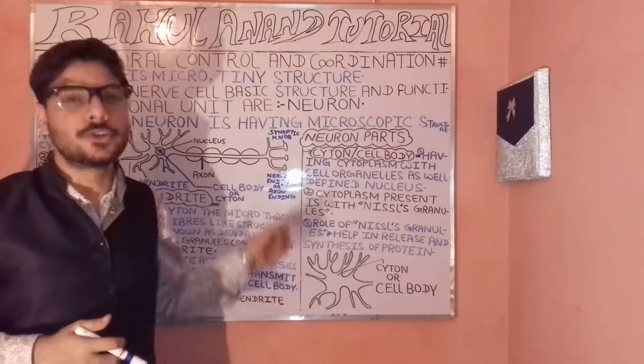Now let's understand the axon. Axons are the elongated fibers generally developed from the cell body region, also called the cytone region. As you can see on the board, the cell body or cytone is shown here. The axon has fibrous endings which are known as axon endings, also referred to as nerve endings.